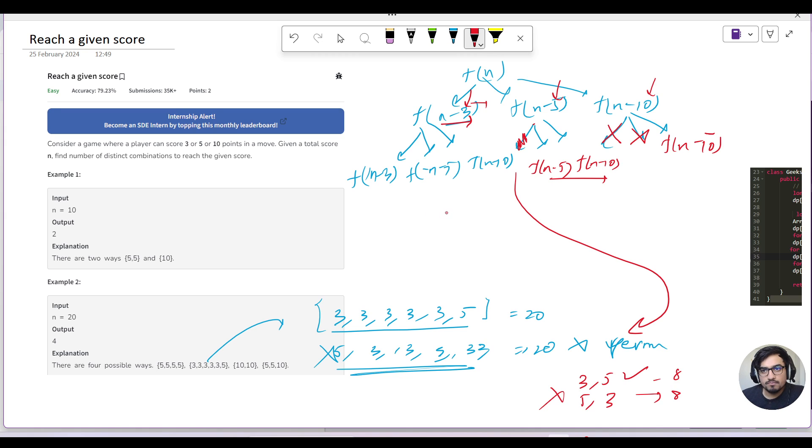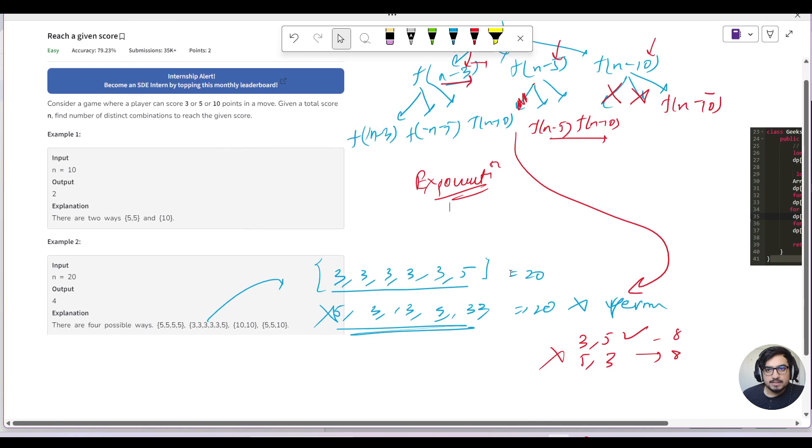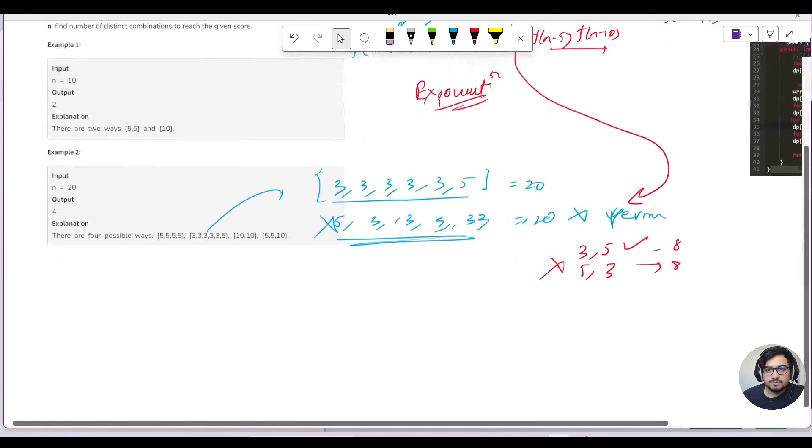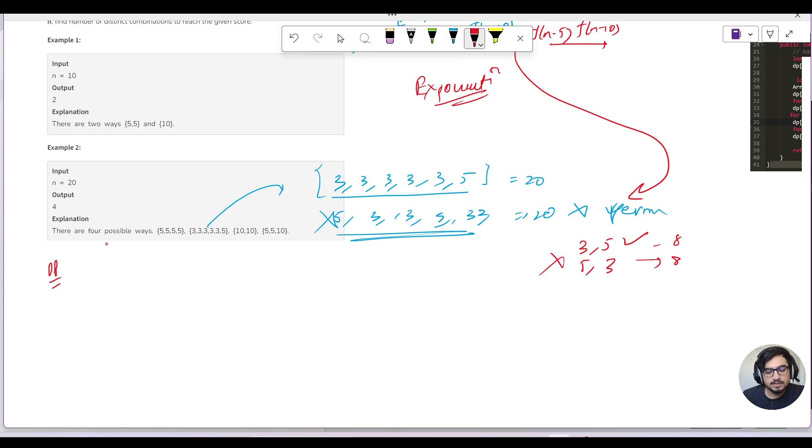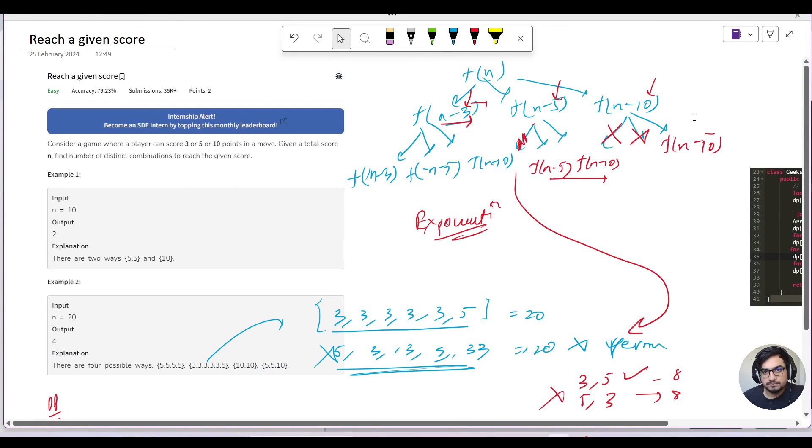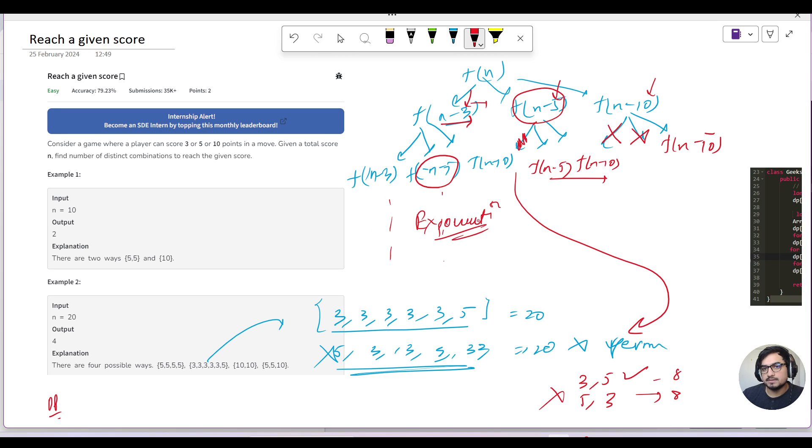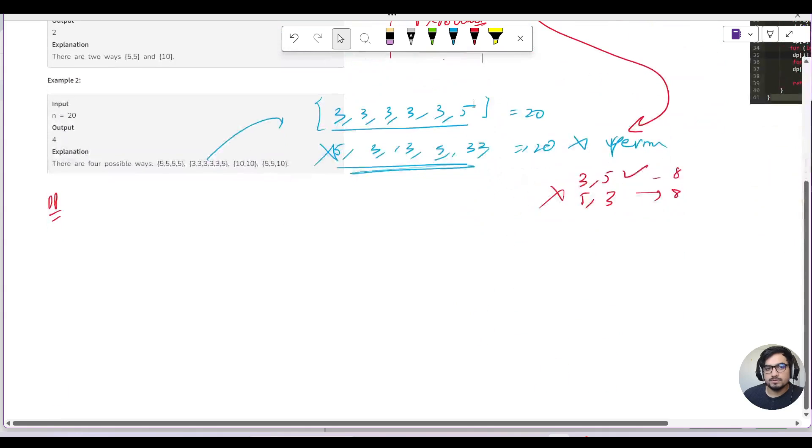But this would be an exponential solution, right? For each and every branch you are deciding to take that element or not take that element. So when we really want to optimize the recursion, then definitely we will use DP, because there are overlapping subproblems. If we keep on expanding the tree, we can see multiple subproblems repeating.